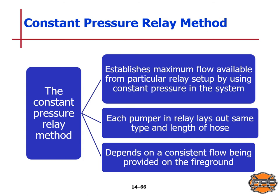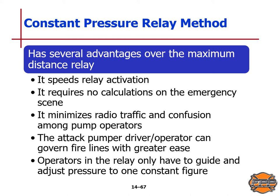The constant pressure relay method establishes the maximum flow available from a particular relay setup by using constant pressure in the system. Each pumper in the relay lays out the same type and length of hose, and this method depends on a consistent flow being provided on the fire ground. This method has several advantages over the maximum distance relay: it speeds relay activation, requires no calculations on the emergency scene, minimizes radio traffic and confusion among pump operators, allows the attack pumper driver operator to govern fire lines with much greater ease, and operators in the relay only have to guide and adjust pressure to one constant figure.